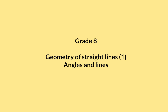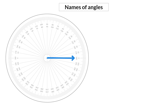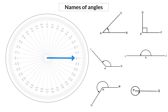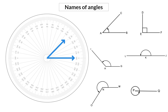In this first video for Geometry of Straight Lines Grade 8, we're going to have a look at all the different types of angles. We're going to start off by having a look at the names of different angles. When we measure an angle and it is between 0 and 90 degrees, we call it an acute angle.